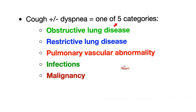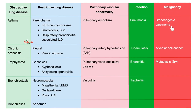We divide lung diseases in general into 5 categories, and all of them can present with cough and/or dyspnea, which means shortness of breath. These 5 categories include obstructive lung diseases, restrictive lung diseases, pulmonary vascular abnormalities like pulmonary embolism, infections, and cancer. These lung cancers could be bronchogenic carcinoma in the bronchial tree, alveolar cell cancer in the alveoli, or metastasis coming from somewhere else to the lungs, such as liver cancer metastasizing to the lung.